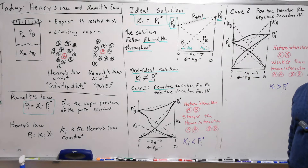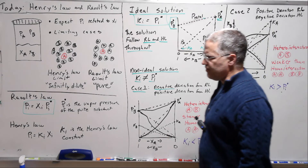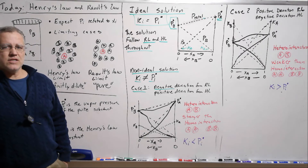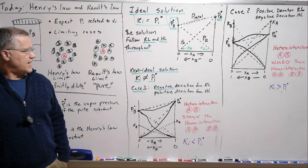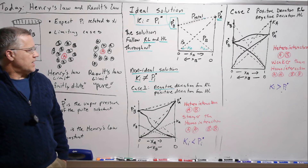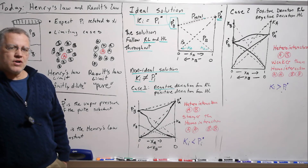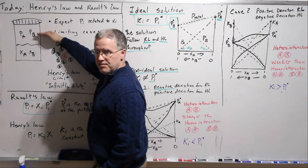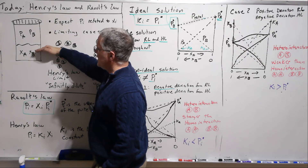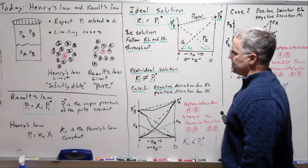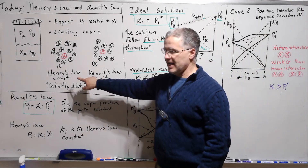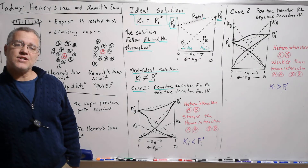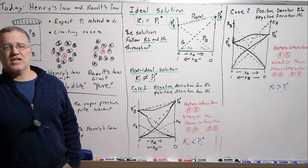This is Henry's law and Raoult's law. Most books will cover this to some degree, though probably sparsely, and there won't be much homework on it. To summarize the big story: there's a relationship between the partial pressures above a solution and the mole fractions in that liquid solution, described by two limiting cases. When we deviate from those cases in a non-ideal solution, that deviation gives us information about the intermolecular interactions, which is pretty interesting.